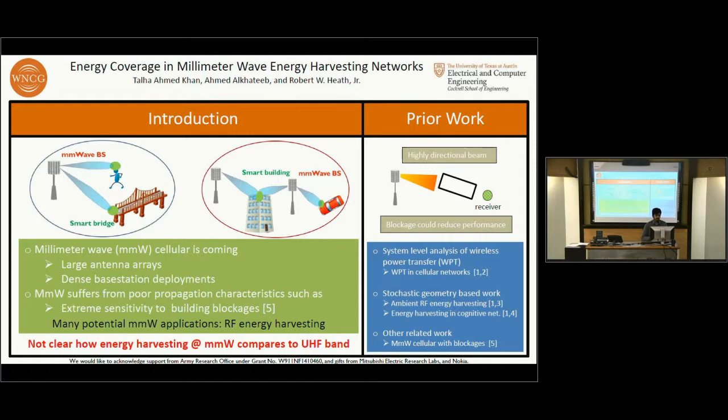It's not clear how energy harvesting at millimeter wave compares to the UHF band. This is mainly because while large directionality could provide higher gains, the propagation characteristics are very poor compared to UHF. In this work, we characterize the performance of millimeter wave energy harvesting and compare it to the UHF case.